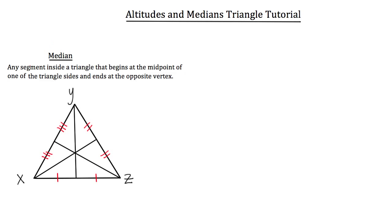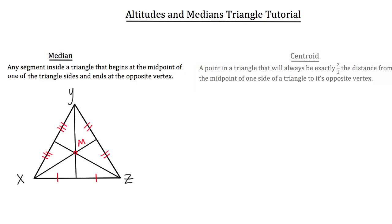You might also notice that the three medians drawn in this triangle all intersect at one point. We're going to label that point M for median. A centroid is a point in a triangle that will always be exactly two-thirds the distance from the midpoint of one side of a triangle to its opposite vertex. Another definition: the centroid is the point where the three medians of a triangle intersect. In triangle XYZ, that centroid is point M.